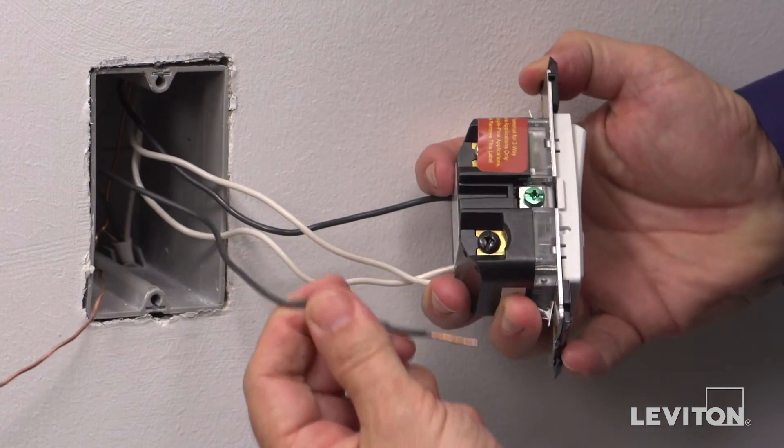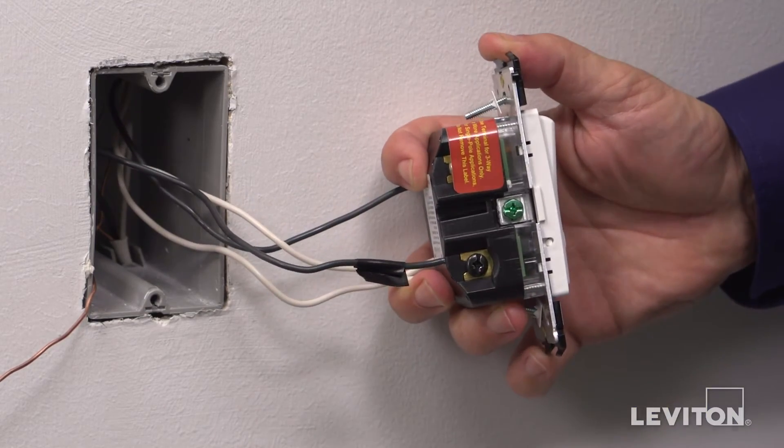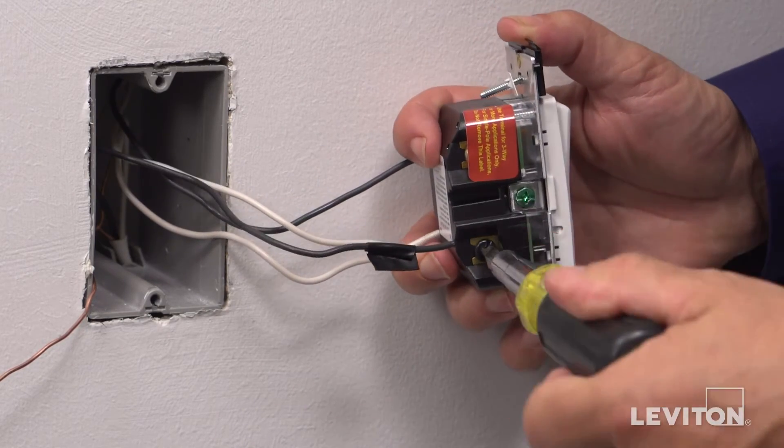Next, take the hot wire and insert it into the hole labeled BK. Tighten the screw to secure.